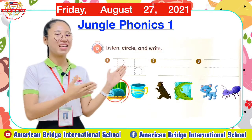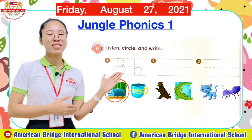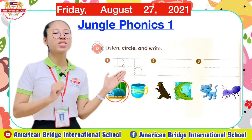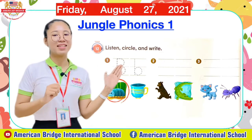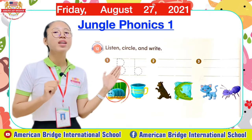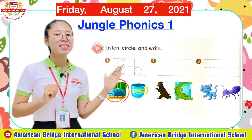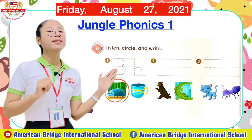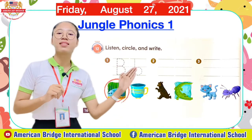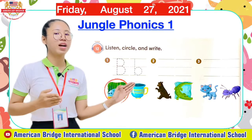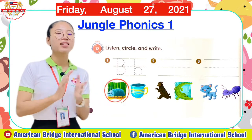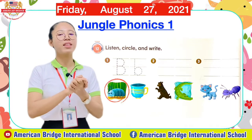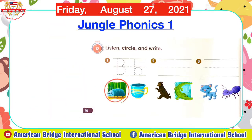Now look at our second exercise together. We need to listen to audio track 12 to get the answer. Enjoy listening, circle the correct sound or word that you hear, and then write it. Now enjoy listening and do it together.